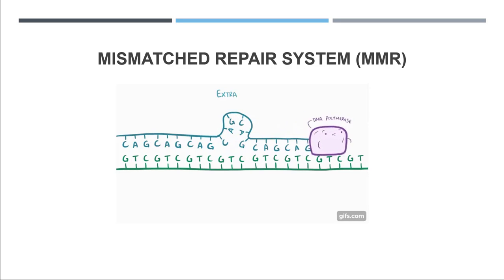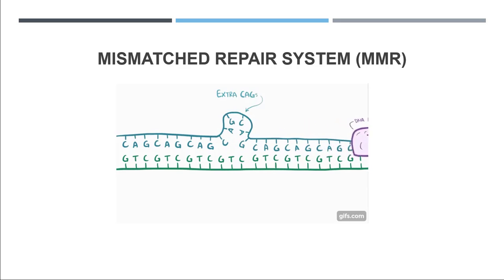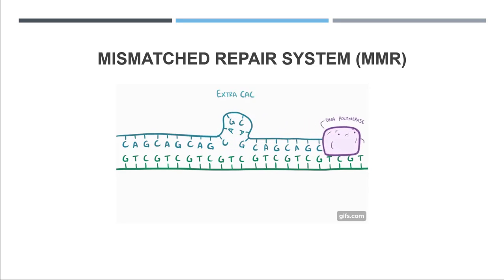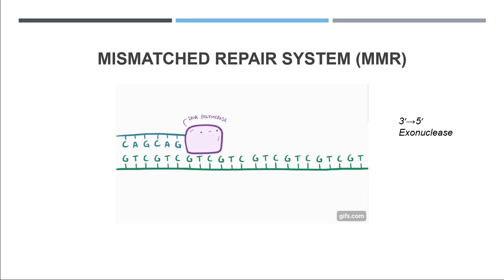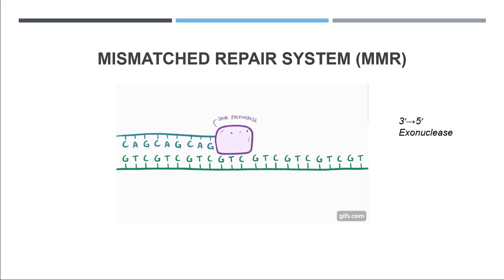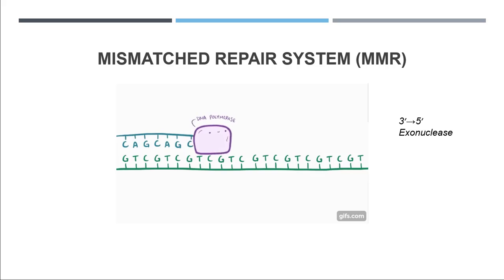Let's discuss the first repair system, the mismatch repair system or MMR. As you can see in the picture, the DNA polymerase is adding new nucleotide strands by copying the old or parental DNA strand during replication. Sometimes this DNA polymerase makes a mistake and adds the wrong nucleotide. Most of the time it fixes the problem itself using a system called 3' to 5' exonuclease, but sometimes — about one in a thousand times — it skips proofreading.